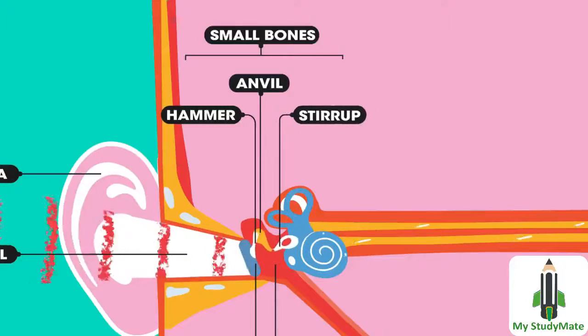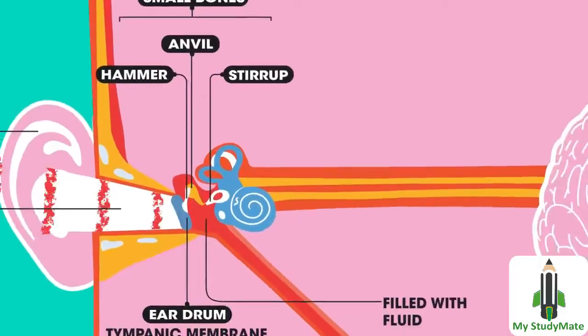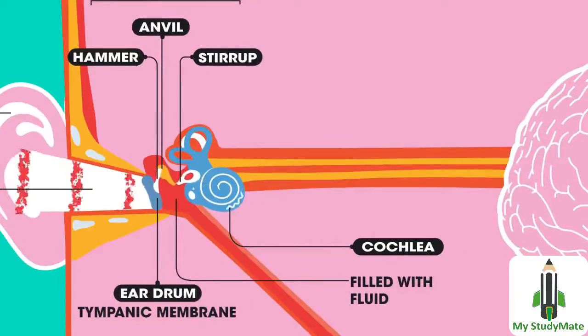There are three small bones: the hammer, anvil, and stirrup. The last bone, the stirrup, is connected to another membrane which covers the entrance to the cochlea.